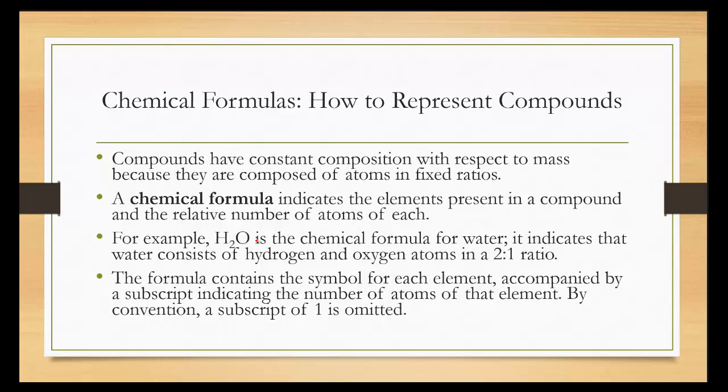Compounds have a constant composition with respect to mass because they are composed of atoms in fixed ratios. The chemical formula indicates the elements present in the compound and the relative number of atoms of each.